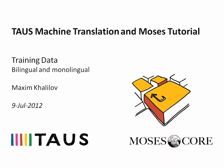Welcome to the Taos Machine Translation and Moses tutorial. Quality and availability of training data are the key factors influencing the performance of any statistical machine translation system. In this module we will talk about sources of bilingual and monolingual data and overview data selection methodology.